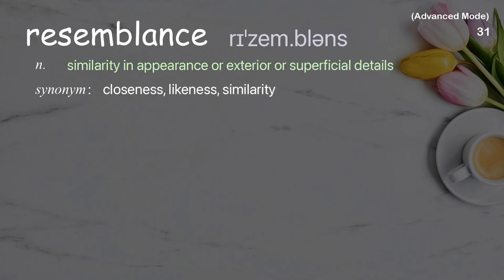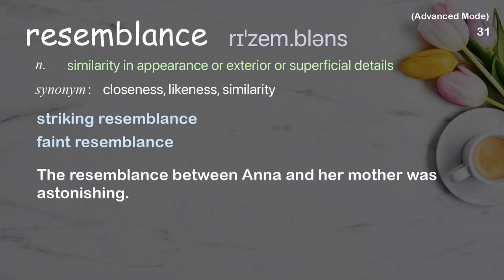Resemblance: similarity in appearance or exterior or superficial details. Examples: striking resemblance, faint resemblance. The resemblance between Anna and her mother was astonishing.